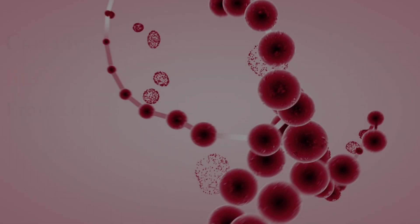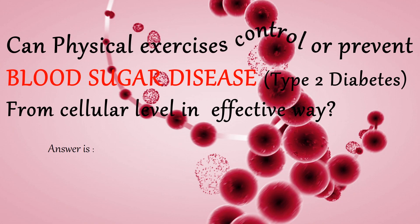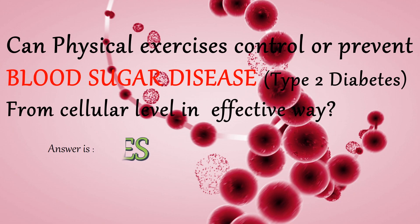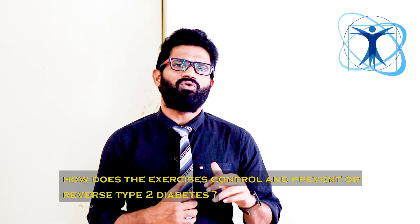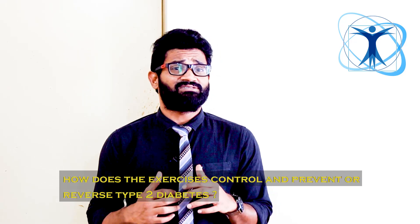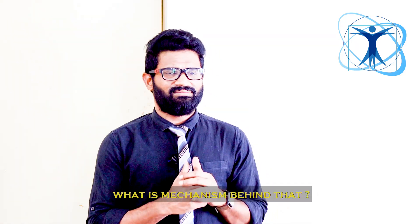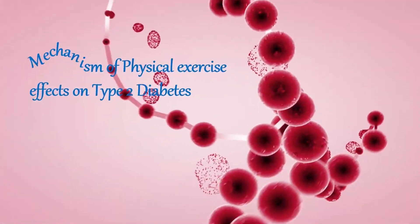Can physical exercise control or prevent blood sugar disease — type 2 diabetes — from a cellular level in an effective way? The answer is yes. How does exercise control, prevent, or reverse type 2 diabetes? What is the mechanism behind that?